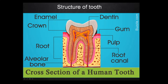What are the two main parts, children? The outer part outside of the gum is the crown, and inside the gum that portion is the root. Now I will explain how to take care of our teeth.